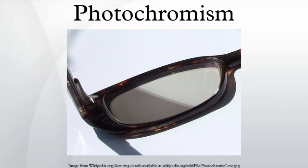The phenomenon was discovered in the late 1880s, including work by Markwald, who studied the reversible change of color of 2,3,4,4-tetrachloronaphthalene-1,4-endoxide in the solid state. He labeled this phenomenon phototropy, and this name was used until the 1950s when Yehuda Hirschberg of the Weizmann Institute of Science in Israel proposed the term photochromism.